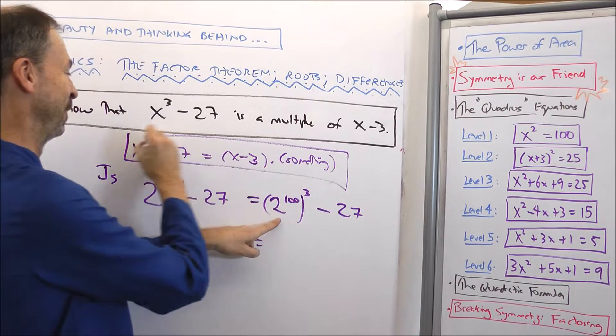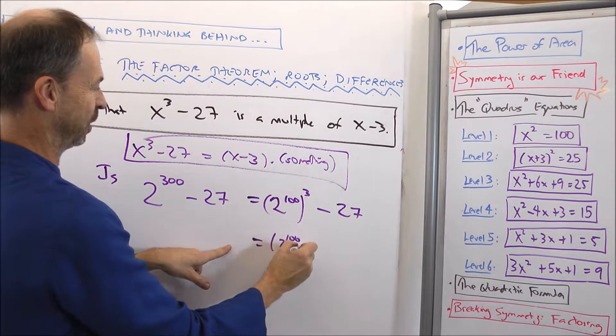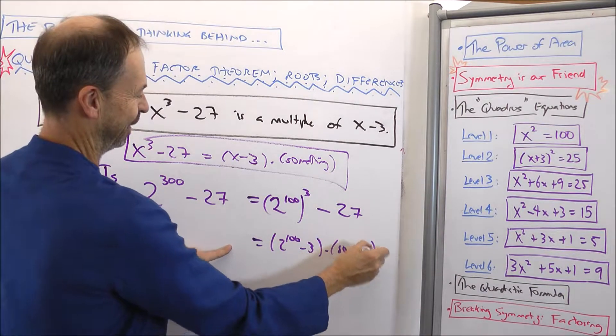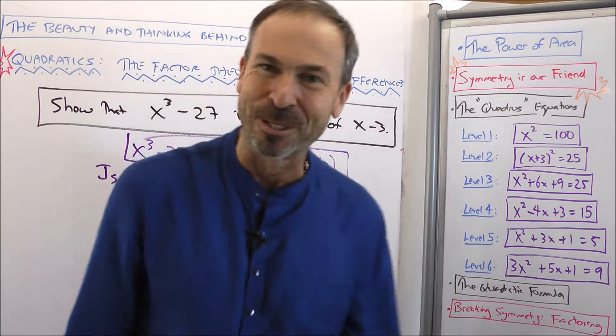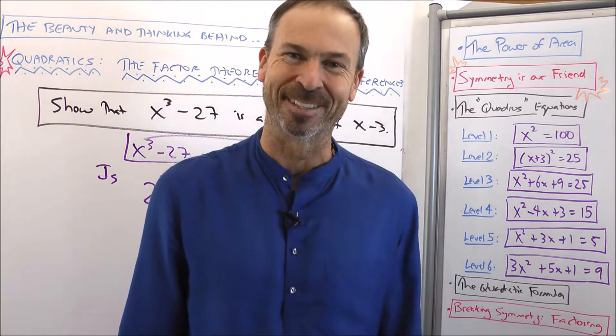so by what we just proved here, this equals (2^100 minus 3) times something, and therefore it's not prime. It actually factors. Beautiful.